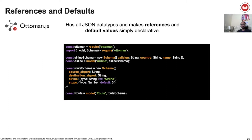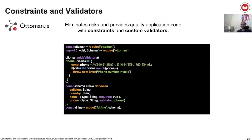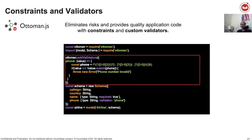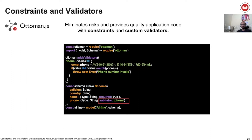Ottoman supports all JSON data types like boolean, number, string, date, and more. References between objects can be defined using the Ref keyword — for example, how a route is associated with an airline. Defaults are ways to provide a default value to a field; for instance, stop has a default value of zero. Constraints and validators are ways to eliminate risk and provide quality application code. In this example, we have defined a phone validator and associated it with the phone field in the schema definition. We have also demanded that the name is mandatory in the airline model. Any action such as save or update made on the document would trigger the validation, and such an action would fail if the values are not provided appropriately.